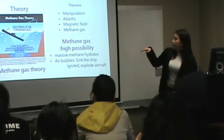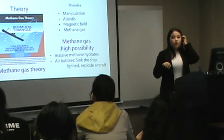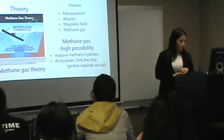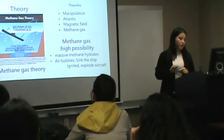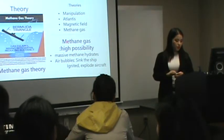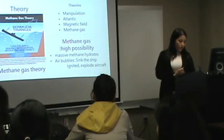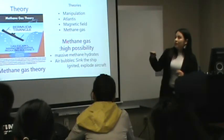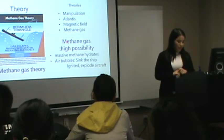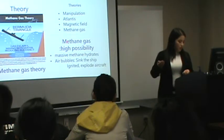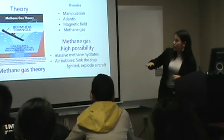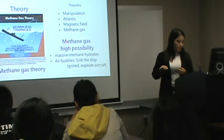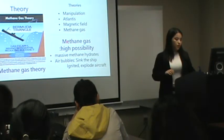There are some hypotheses such as manipulation of the cases and movement of magnetic fields. The methane gas theory is a hypothesis, and also this is the highest possible theory among the hypotheses. Bermuda deep water has a layer of methane hydrate. When methane gas bubbles occur in cracks on the ocean floor, the ship loses buoyancy and sinks. Also, aircraft exploded because of methane gas.